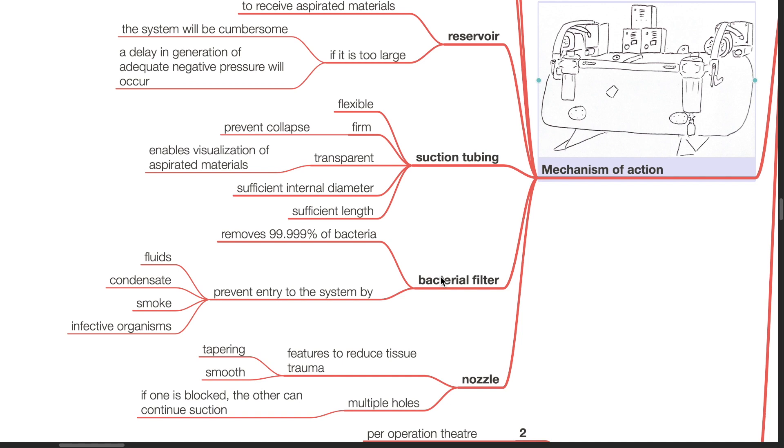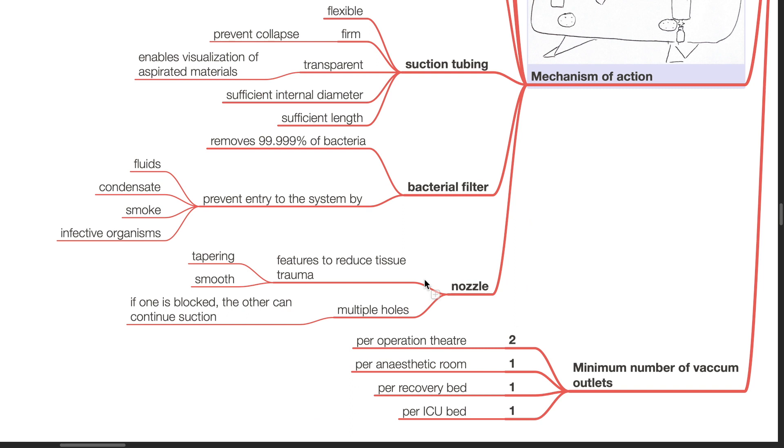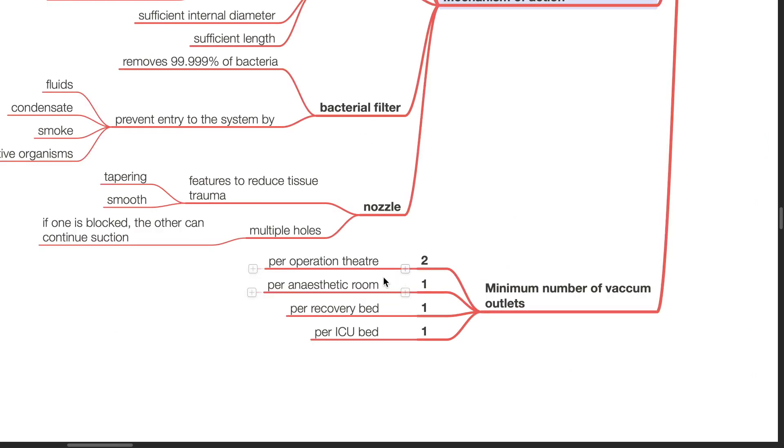Bacterial filter removes 99.999% of bacteria and prevents entry to the system by fluids, condensate, smoke, and infective organisms. Nozzle features to reduce tissue trauma include a tapering and smooth end. Multiple holes are present so that if one is blocked, the other can continue suction. Minimum number of vacuum outlets should be 2 per operation theatre, 1 per anesthetic room, 1 per recovery bed, 1 per ICU bed.